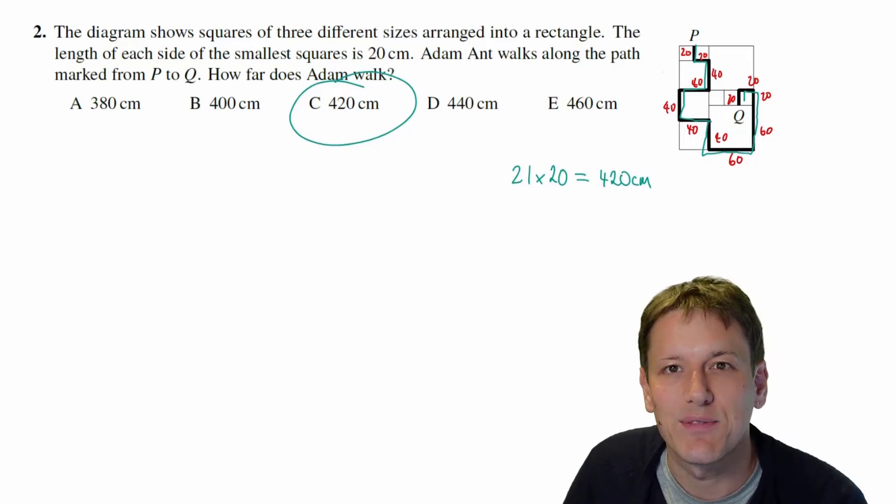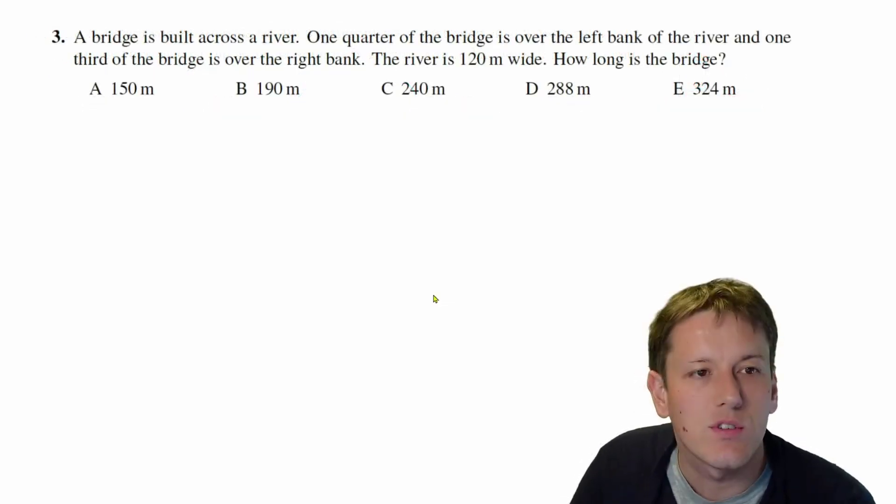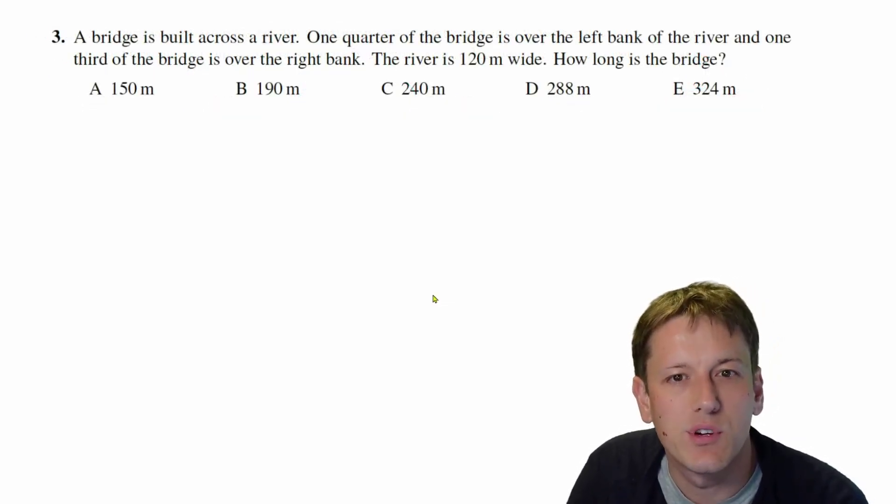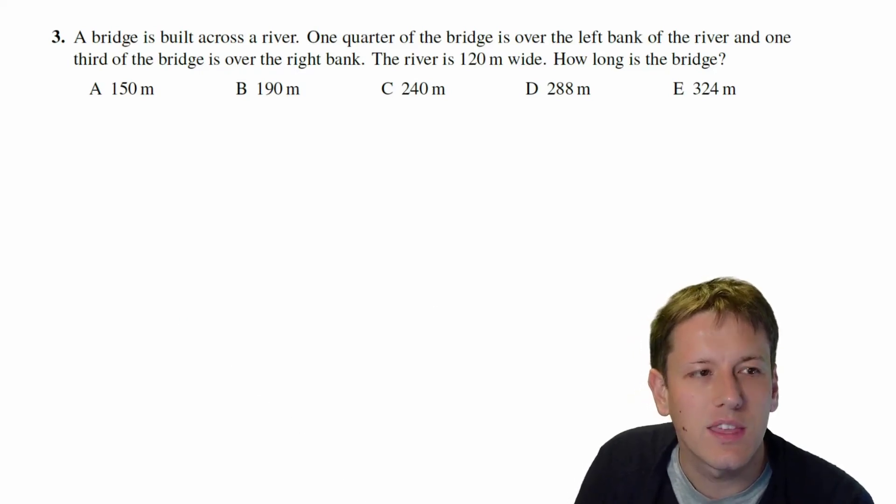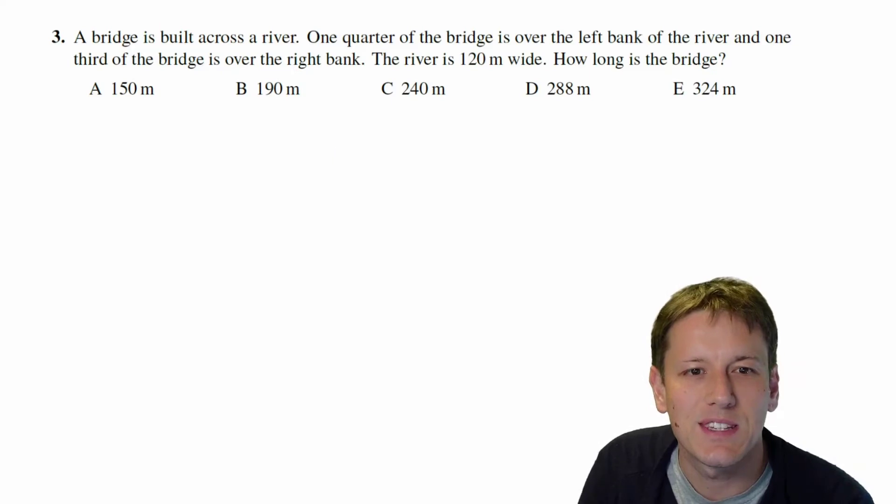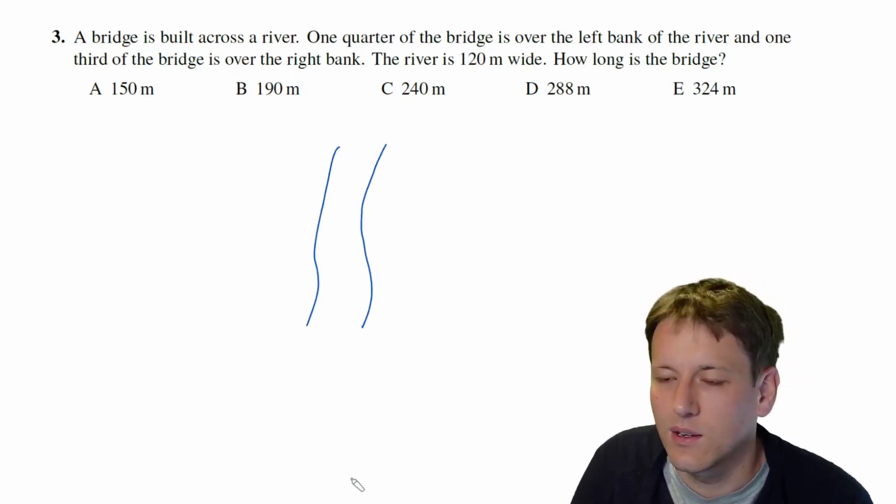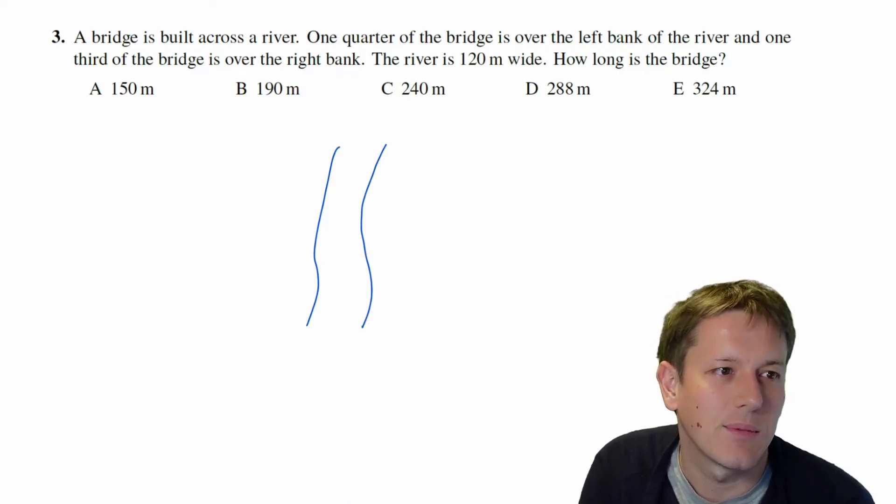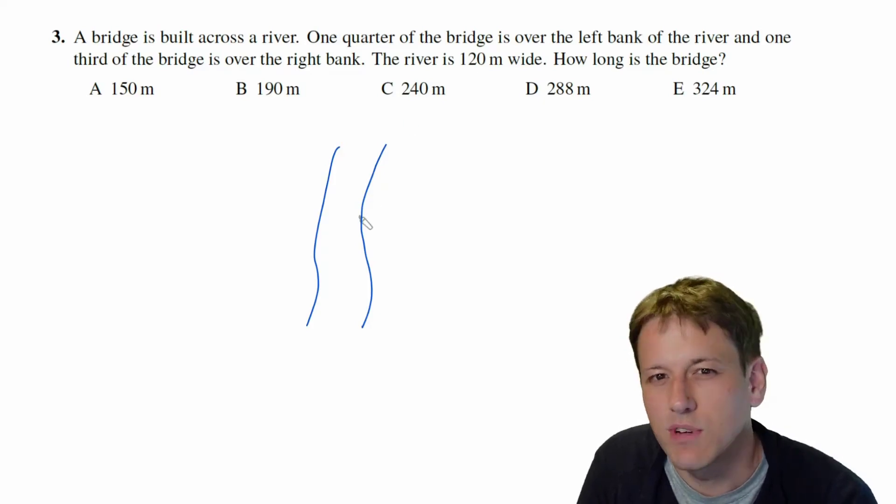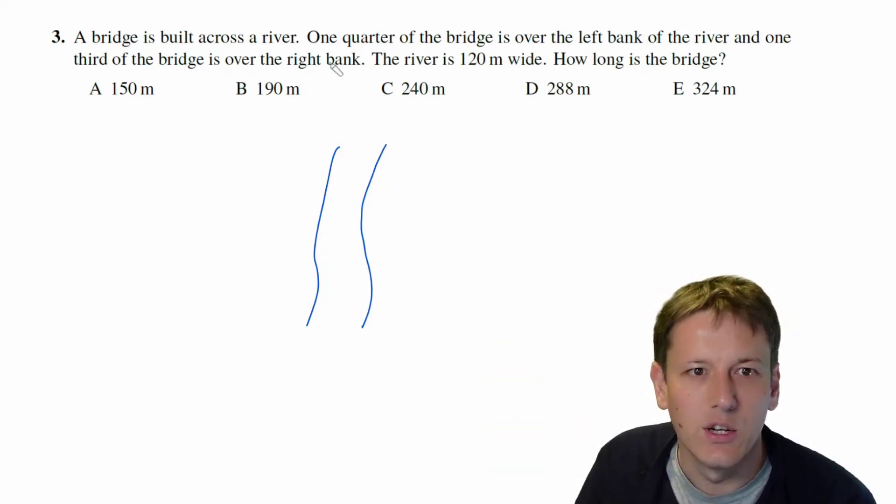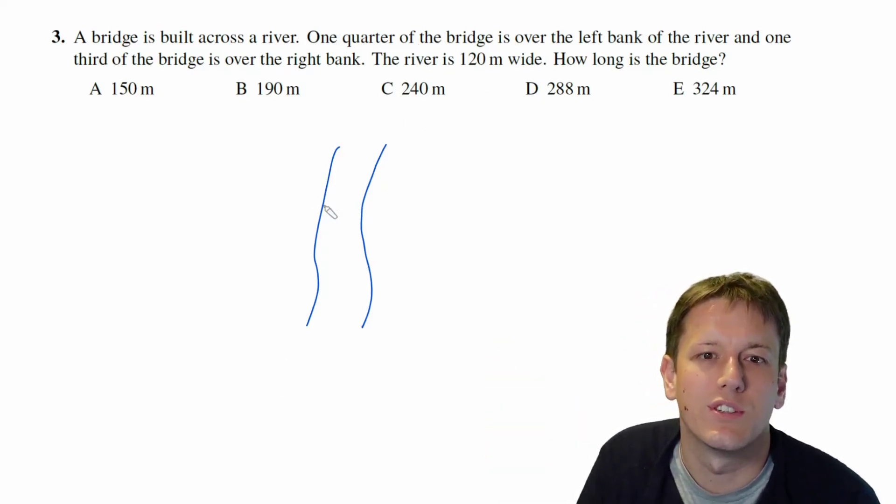In question three, a bridge is built across a river. One quarter of the bridge is over the left bank and one third is over the right bank. The river is 120 meters wide. How long is the bridge? So I think you're meant to be able to try to sort of picture this, so I've got some river here and I'm going to draw this all totally flat and two-dimensional. The only way we can make sense of this question really is to be sort of thinking of it as a plan drawing.